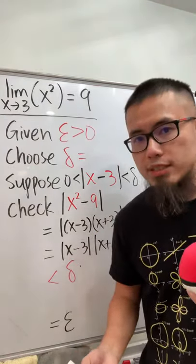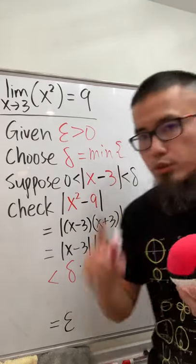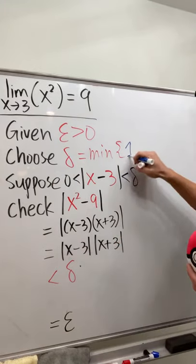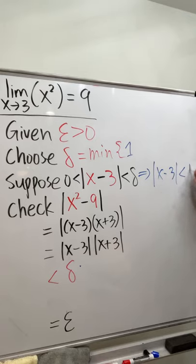when we are dealing with a quadratic situation, just go ahead and do the following: you take the delta to be the minimum, and you always use 1 because it's easy. So you put down the 1 right here, and when you have 1, you can look at this inequality, and you change that to be the absolute value of x minus 3 is less than 1.